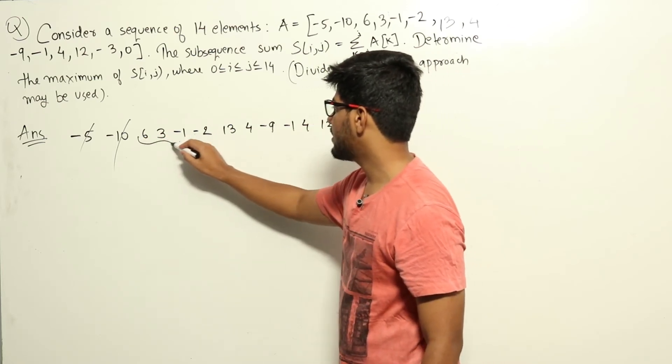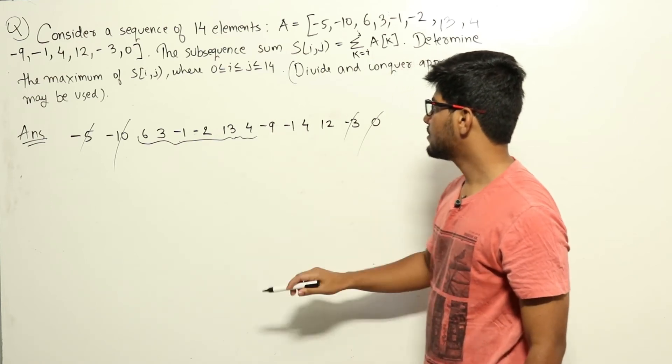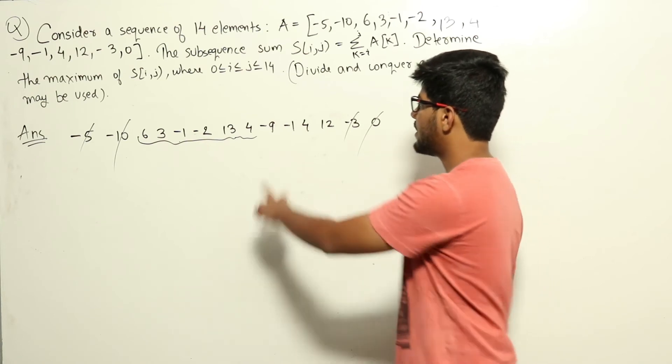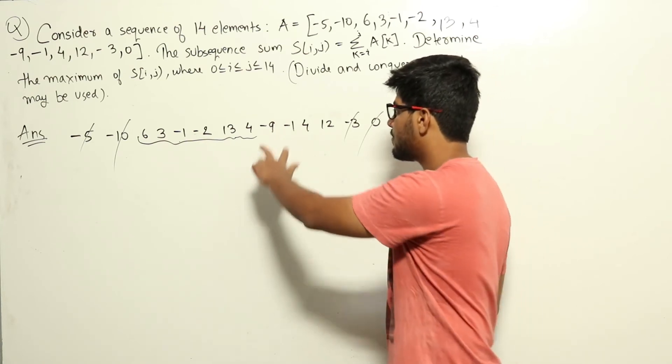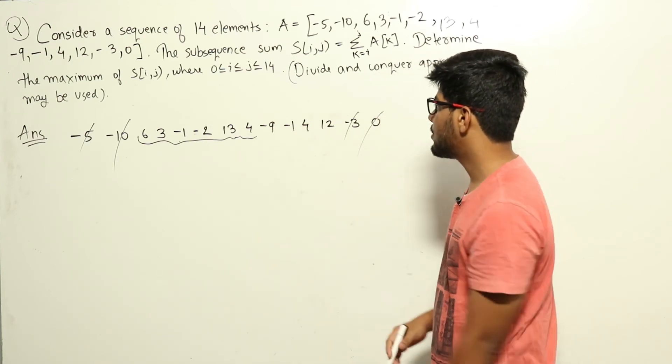Now I'm starting from here, I have reached till here. Now this is a positive number, for sure I will take this. So the total sum here is 23 taking this much part. Now if I take a look at the next, it is -9, and after that there is -10. So if I take these two numbers, our sum will reduce by -10. So let us see if there are any positive numbers to the right side of it.